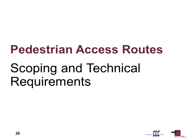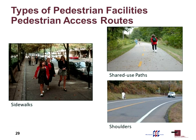Now we're going to talk about scoping and technical requirements. There are a lot of different kinds of pedestrian access routes and pedestrian facilities. Sidewalks are the most common. Shared use paths can be shared between pedestrians, bicycles, and rollerbladers, though some places restrict certain mobility devices on shared use paths and state laws must be considered.